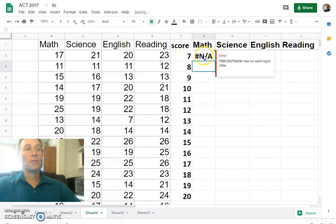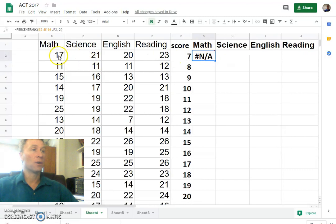You might think it didn't work. It's just that there's no scores of seven or below in the math category. There is one in English, so we'll keep the seven.